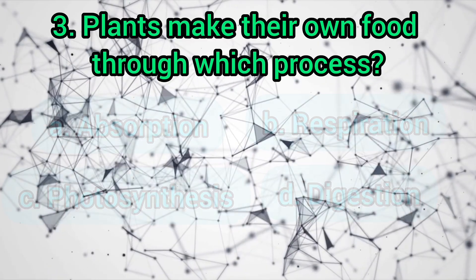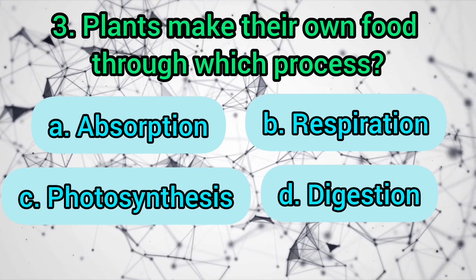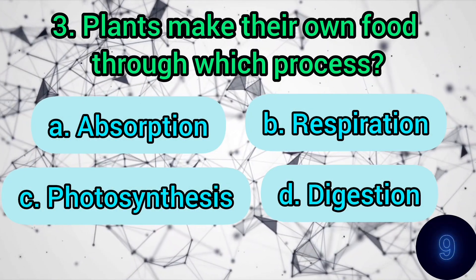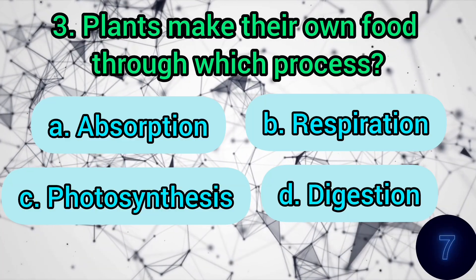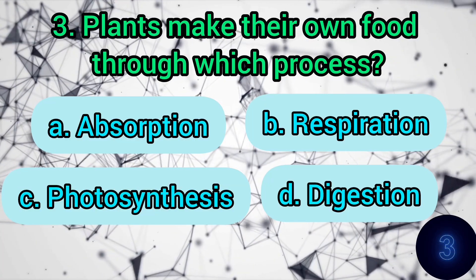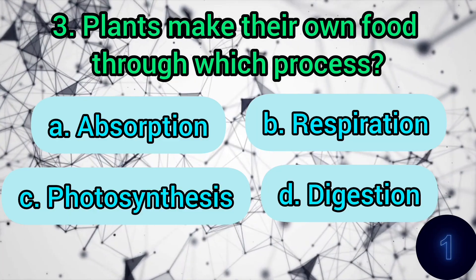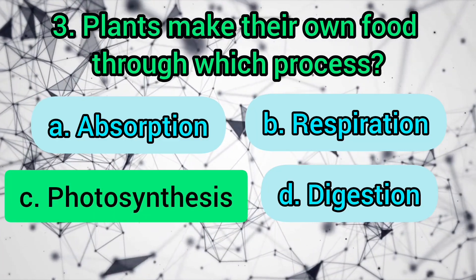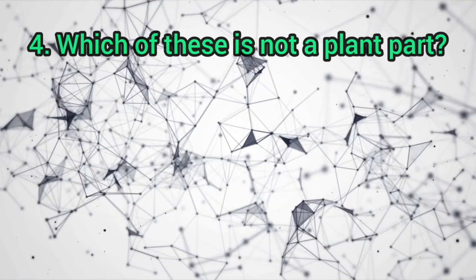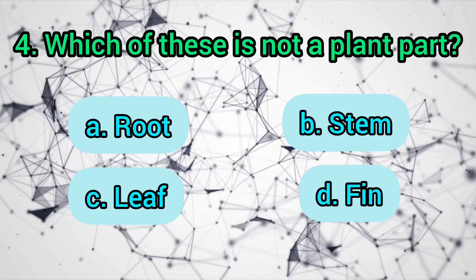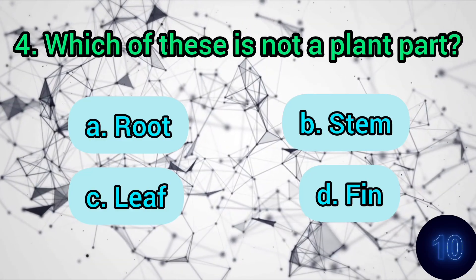Plants make their own food through which process? Absorption, respiration, or photosynthesis? The answer is: photosynthesis. Which of these is not a plant part? Root, stem, leaf, or thing? The answer is: thing.